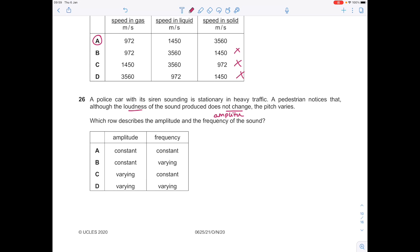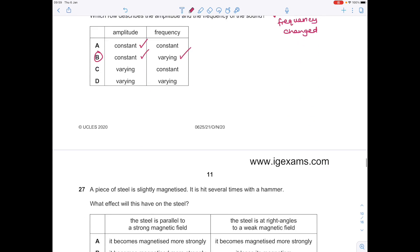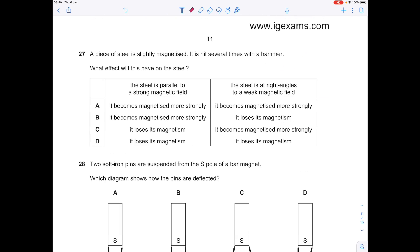We're saying that the loudness hasn't changed. Remember, loudness and amplitude are linked, so we know that the amplitude can't have changed. The pitch is related to the frequency, so that must have changed. We're looking at the rows where the amplitude is constant but the frequency is changing, which is why B is the answer.